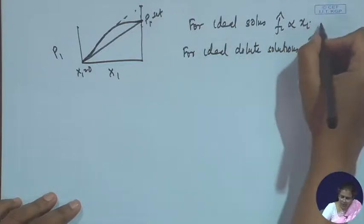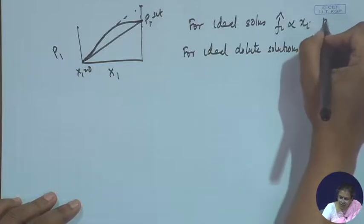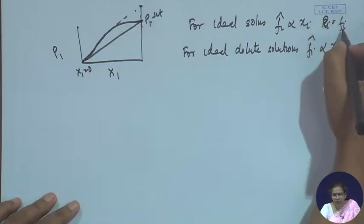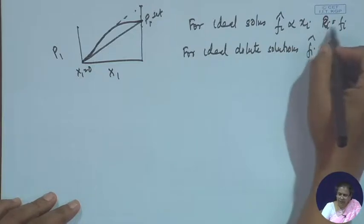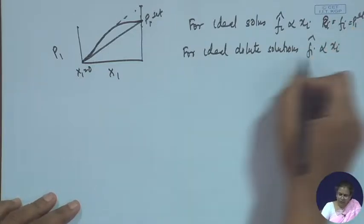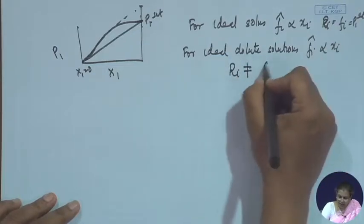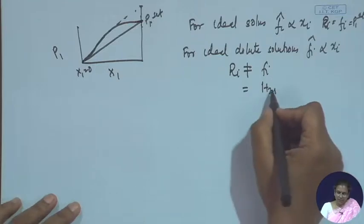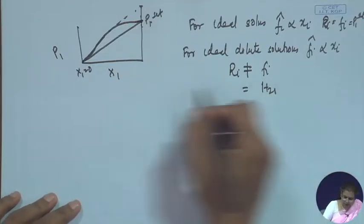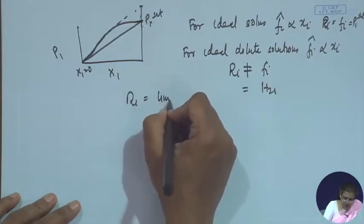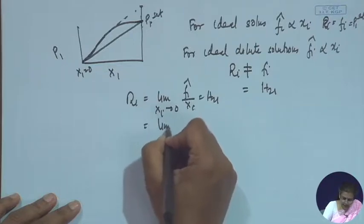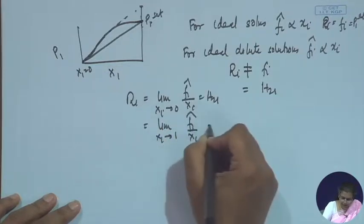What is the difference? In the ideal solution case, we take the proportionality constant k_i — or r_i — which is equal to the fugacity of the pure component at the conditions of temperature and pressure of the solution, and for low to moderate pressure this becomes p_i saturated. For the ideal dilute solution, r_i is not equal to f_i; instead it equals h_21, which is Henry's constant of component 2 in component 1. So r_i = limit(x_i→0) of f_i_bar / x_i = h_21, while limit(x_i→1) of f_i_bar / x_i = f_i.